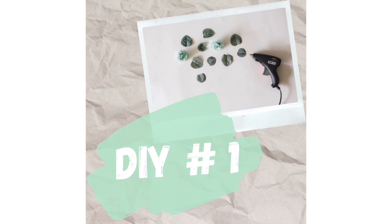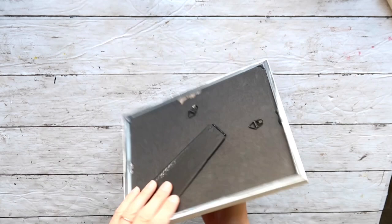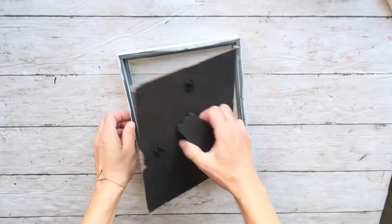For this project I'm going to be using this frame from the Dollar Tree. I previously used it and painted it white, but you can use any frame that you have. First I'm going to take this cardboard box from cereal and the glass from the frame and trace it out and cut it out.